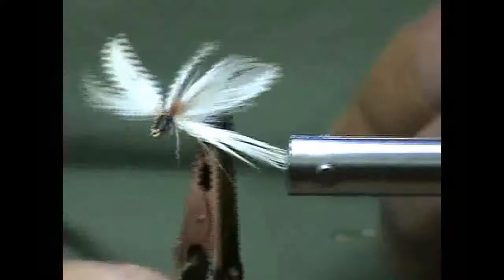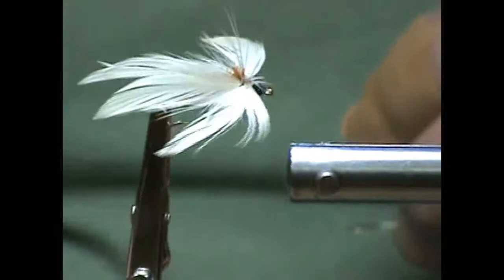Hello and welcome back to Richard Katzmann Flytying and today we're going to be making a fly that I call the white glider. It's a beautiful little fly and it's made to just lay on top of the water and just glide with the current. Let's get started.